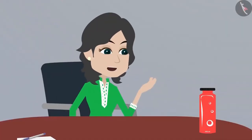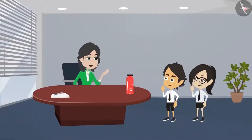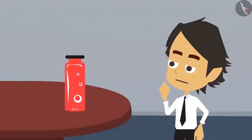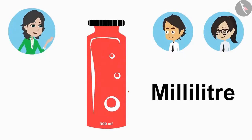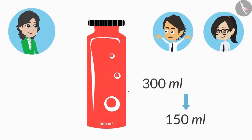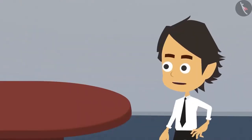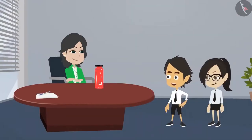This buttermilk is a liquid. Liquid is measured in liter or milliliter. It must be written somewhere on this bottle — how many milliliters of buttermilk does it contain? Here it says that this bottle has 300 milliliters of buttermilk. We use ml to write milliliter. Half of 300 ml will be 150 ml, which means if we divide the buttermilk into two equal halves, we both will get 150 ml each.